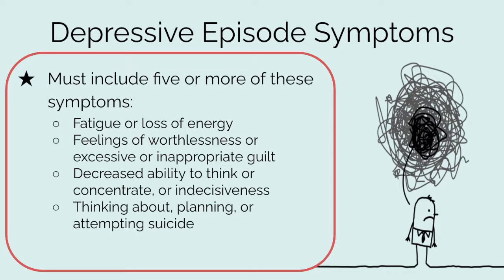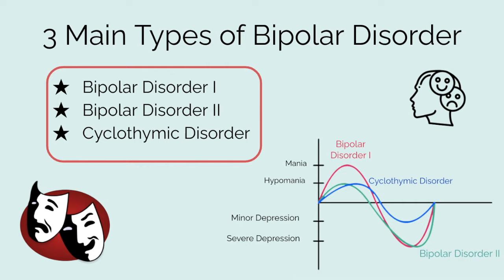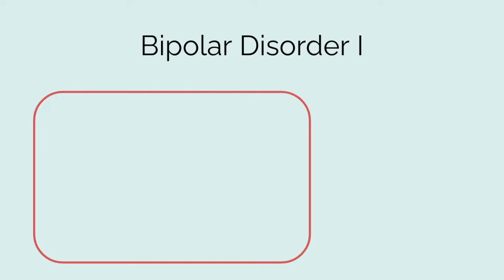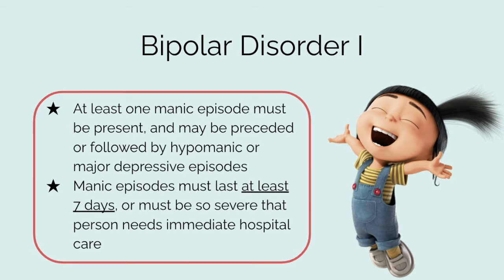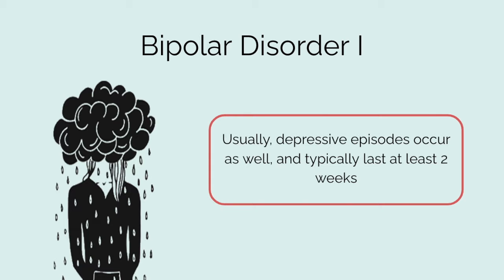There are three main types of bipolar disorder: Bipolar disorder 1, Bipolar disorder 2, and Cyclothymic disorder. You can think of the three types as being on a graph, each having a varying severity of manic and depressive symptoms. In Bipolar disorder 1, at least one manic episode must be present and may be preceded or followed by hypomanic or major depressive episodes. Manic episodes must last at least seven days, or manic symptoms must be so severe that the person needs immediate hospital care. Depressive episodes typically last at least two weeks.